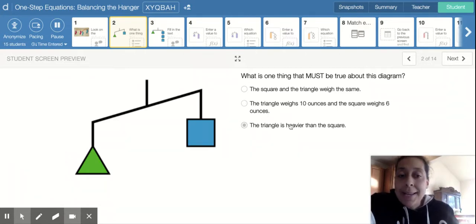The next one says the triangle weighs 10 ounces and the square weighs six ounces. Now that was picked by a lot of students in here and that's why I actually created this video, because you do not see any weights on either one of these, the triangle or the square.